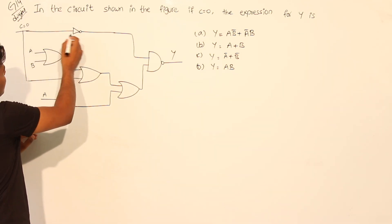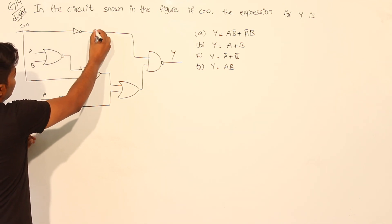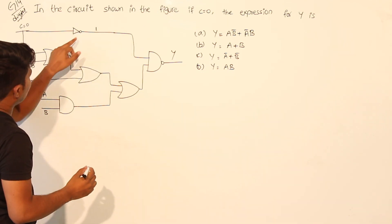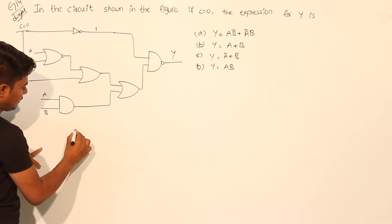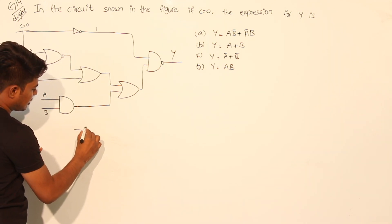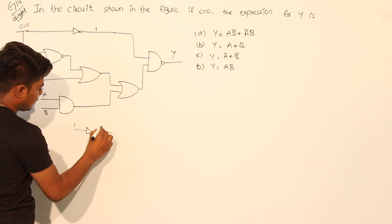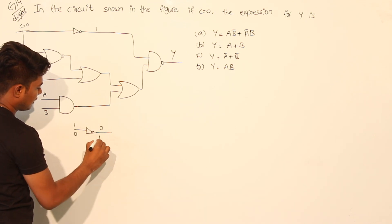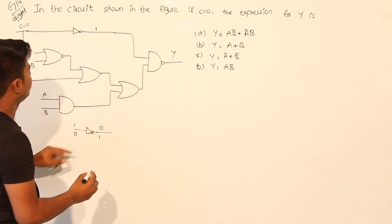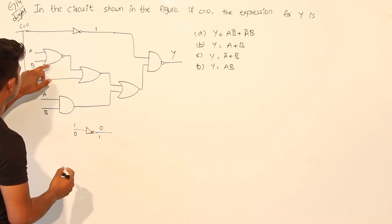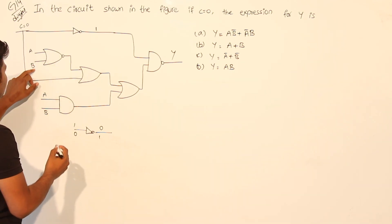With C equal to 0, this is an inverter circuit. The 0 input to the inverter will become 1 at the output. For an inverter circuit, if you give input 1, output 0 will come; if you give input 0, output 1 will come. So the output here is 1.